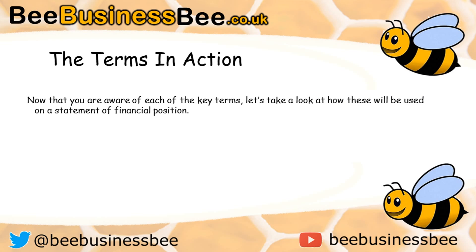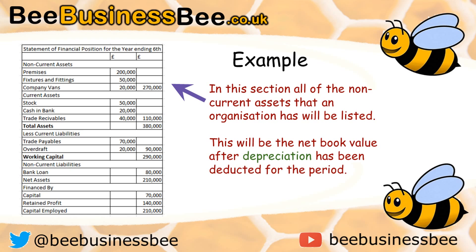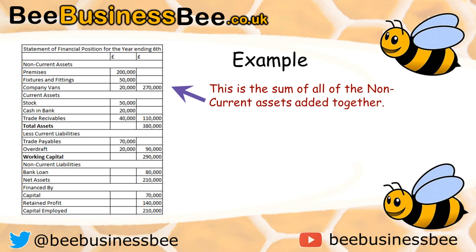Now let's look at how these terms are used on a Statement of Financial Position. This is what a statement of financial position would typically look like. In this section, all the non-current assets from an organisation will be listed — your building, your premises, your fixtures and fittings, and your van or vehicles. These are all non-current assets. This will be the net book value after you've taken away depreciation for that period — what the asset is actually worth at the time the picture was taken. The total of all non-current assets appears in the end column, giving us £270,000.